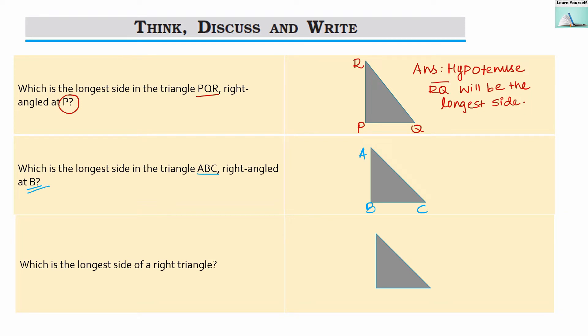So our B should be at right angle. Its measure should be 90 degrees. So ABC. Now which will be the longest side? So here AC will be the longest side for this triangle ABC.